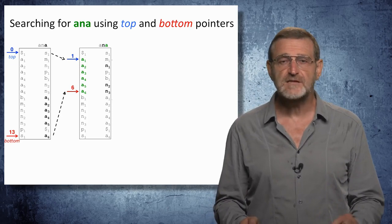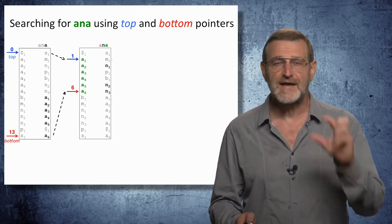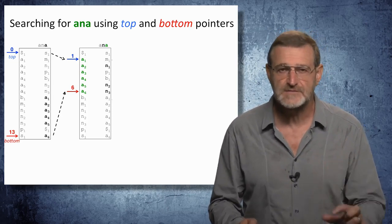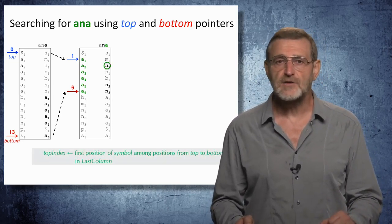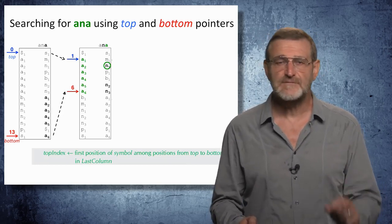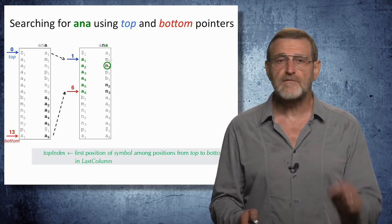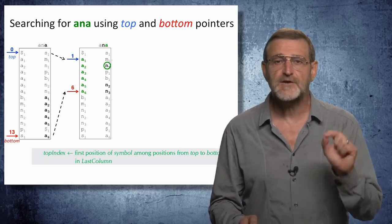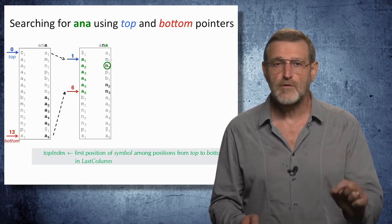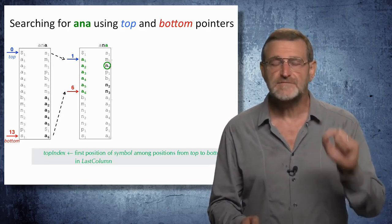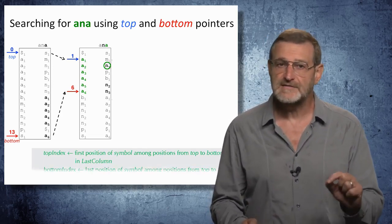At the next iteration, the range of positions we are interested in is narrowed to all positions where A appears in the first column. Then, what do we do afterwards? We are looking for the next symbol, which is N in 'ana'. And we are looking for the first occurrence of this symbol in the last column, among positions from top to bottom, among rows from top to bottom.